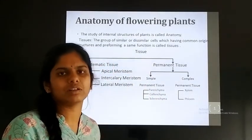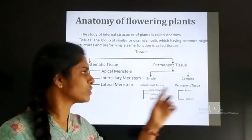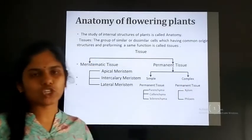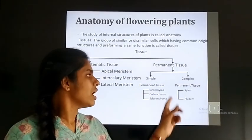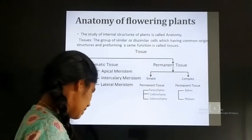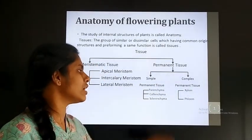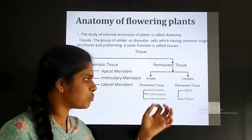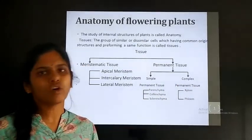We covered the structures and functions of those simple permanent tissues in the last class. Now, what is complex permanent tissue? Complex permanent tissue is of two types: xylem and phloem. The main function of xylem is conduction of water, and phloem is helpful for the conduction of food material.